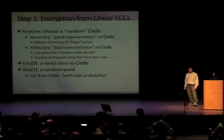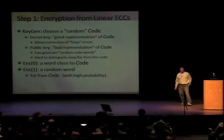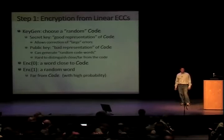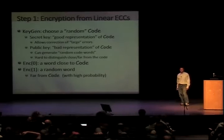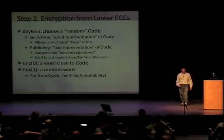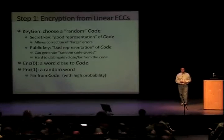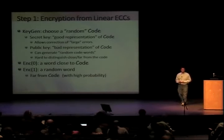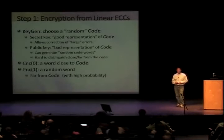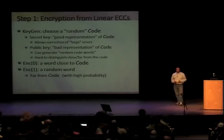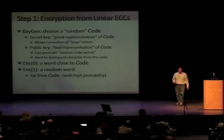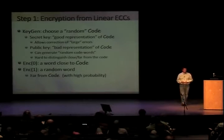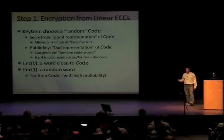How do you use it for encryption? In key generation, choose a random code that has two representations: a good representation allowing error correction, and a bad representation from which you cannot distinguish points close to the code from those far away. Encrypting zero means choosing a point close to the code; encrypting one means choosing a random point in the domain, which with high probability is far from the code. With the secret key's good representation, you try to correct errors — success means close to a codeword, failure means far away.